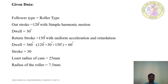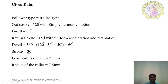First, we have to write the given data. The type of follower is roller type. Outstroke is 120 degrees with Simple Harmonic Motion. Dwell is 30 degrees. Return stroke is 150 degrees with Uniform Acceleration and Retardation. The remaining dwell is 60 degrees. Least radius of the CAM is 25 mm. Radius of the roller is 7.5 mm.